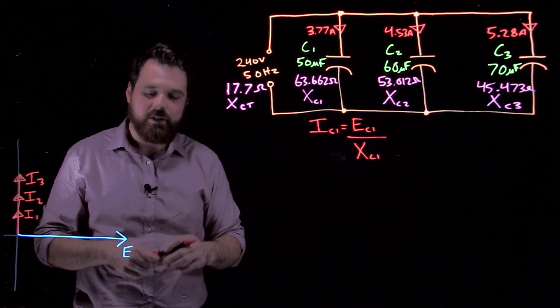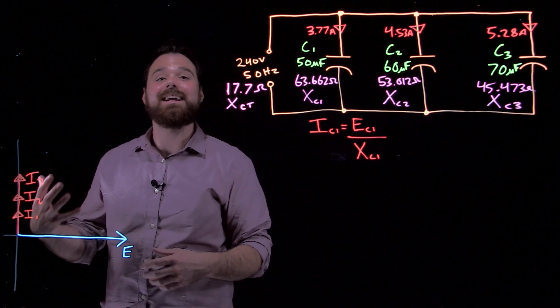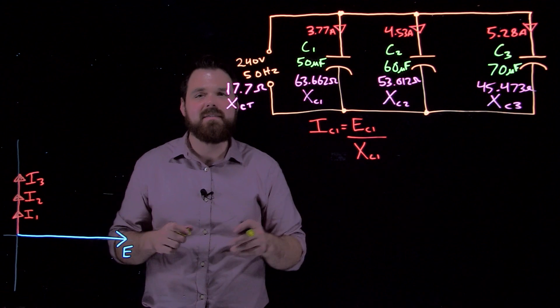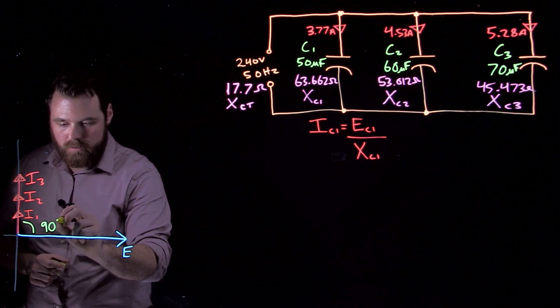They're at positive 90 degrees because our voltage is lagging our current, or our current is leading our voltage by that 90 degree phase angle.